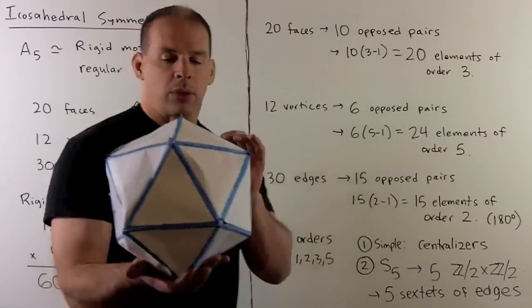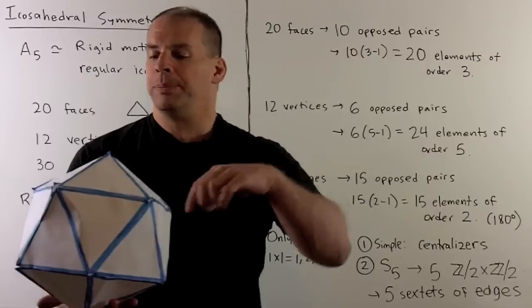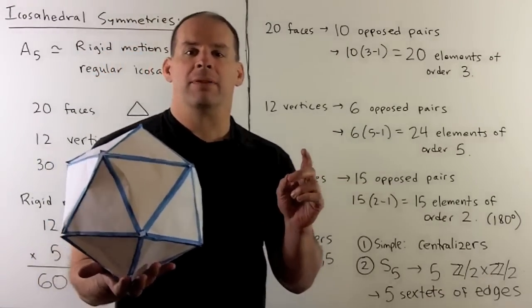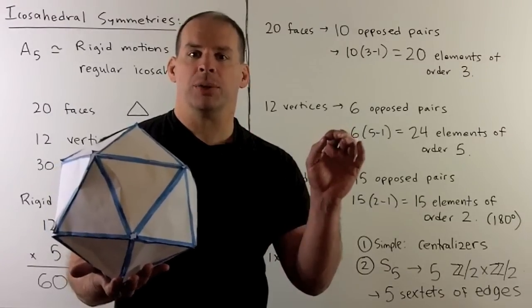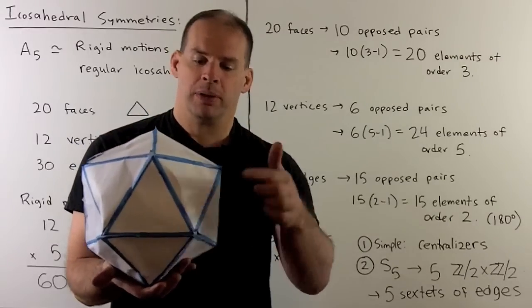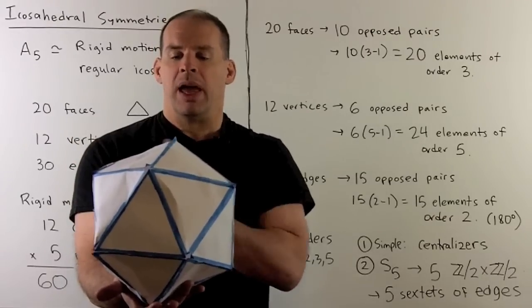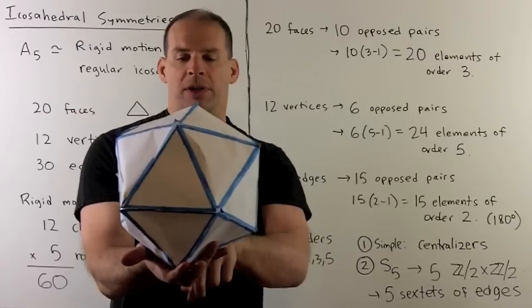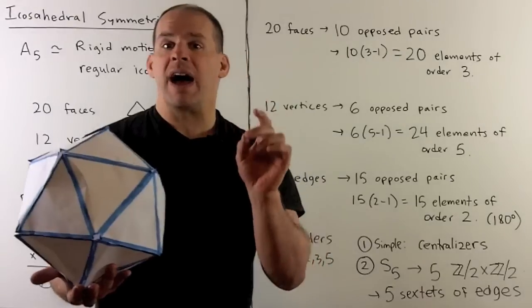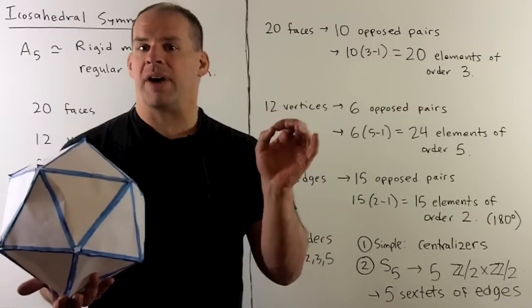What does the icosahedron have to do with S5? We're looking for five elements being permuted under rigid motions. A hint comes from Sylow theory: we have five Sylow 2-subgroups, each isomorphic to Z mod 2 cross Z mod 2. Looking at elements of order 2, when we pick an opposing pair of edges we actually get a sextet — two opposing edges on top and bottom plus perpendicular pairs going around. There are five such sextets, and when we perform a rigid motion we transform these sextets into other sextets, which is where S5 enters the picture.